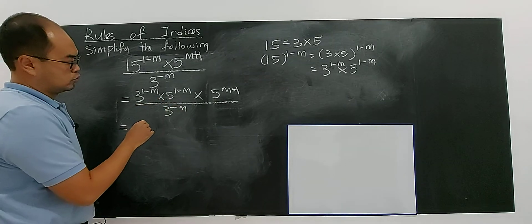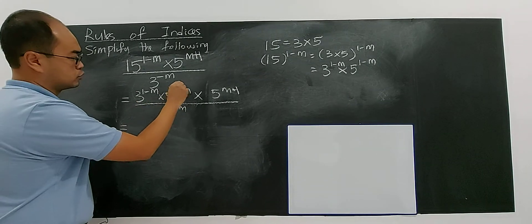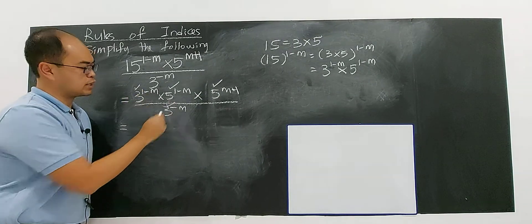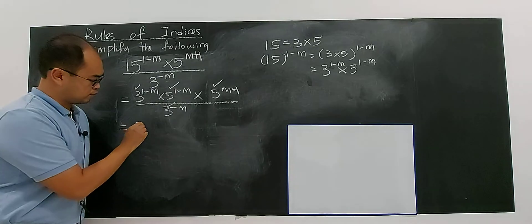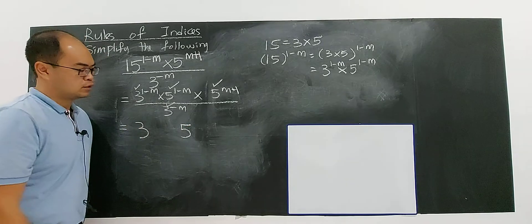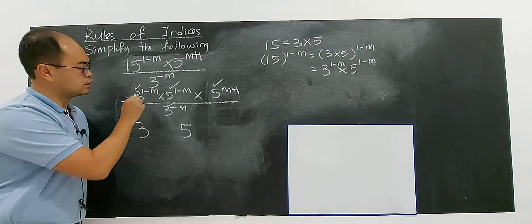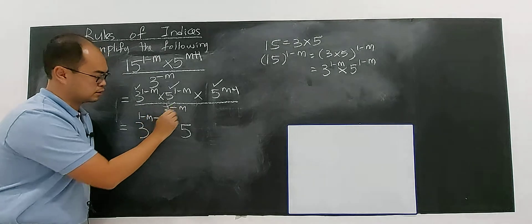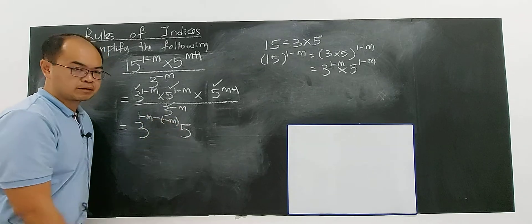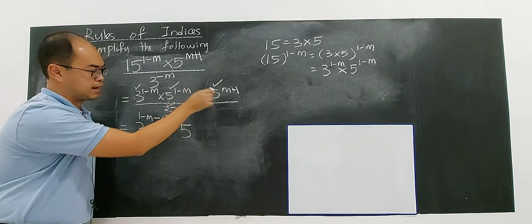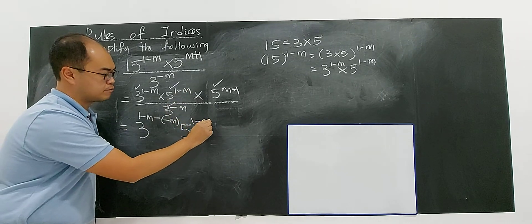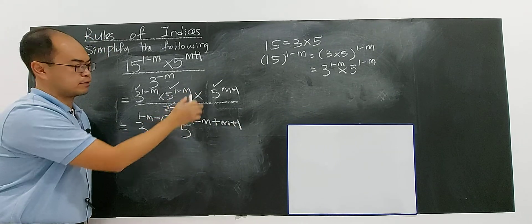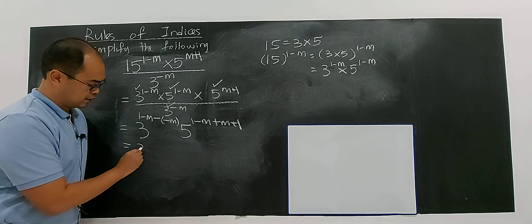Now look at these two — they have the same base. And the denominator 3 also has the same base. So be careful: we have 3 and 5, two things to deal with. For 3, you have 1 minus m, and since this is a divide, you have to minus the negative m. For 5, you add: take 1 minus m and add with m plus 1, because multiply becomes divide.